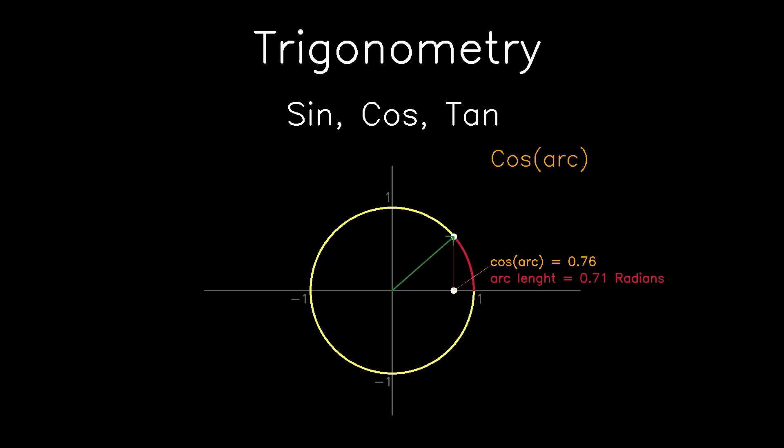Cos is a function that takes in the arc length and outputs the x-coordinate. It's obvious that the x-coordinate will be positive in the first quadrant and the fourth quadrant, and the x-coordinate will have to be negative in the second quadrant and the third quadrant.